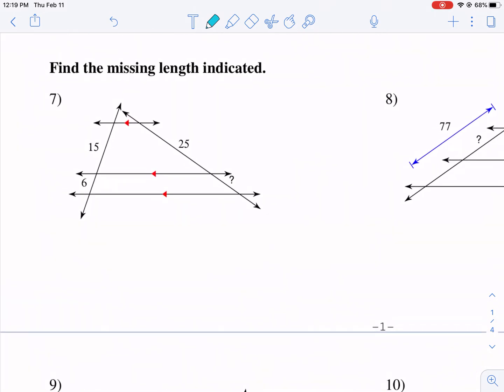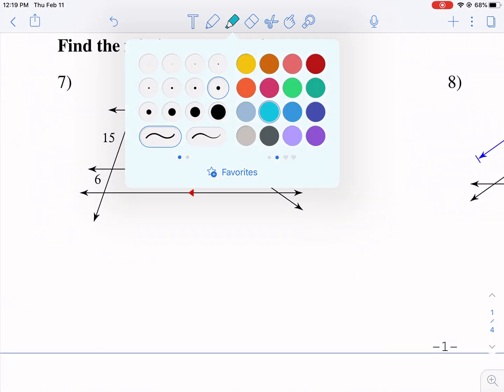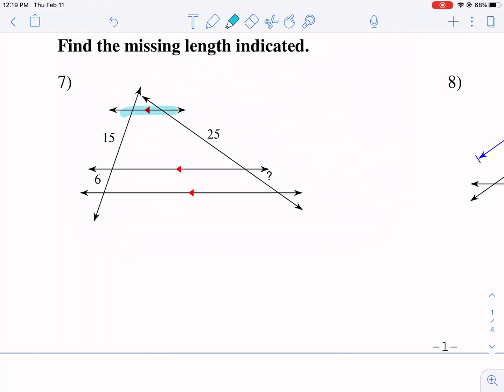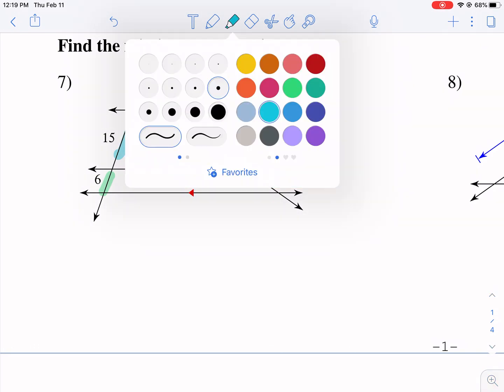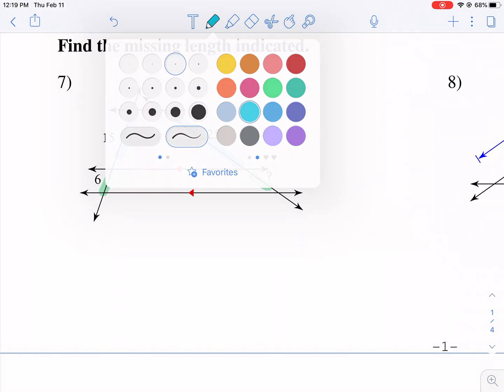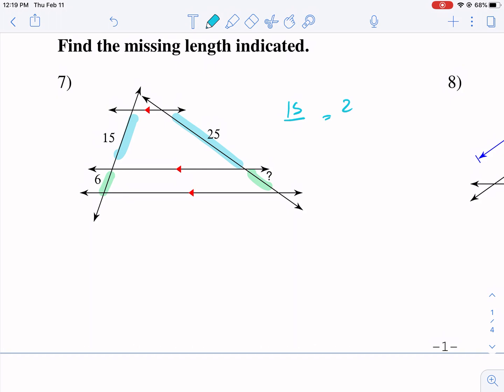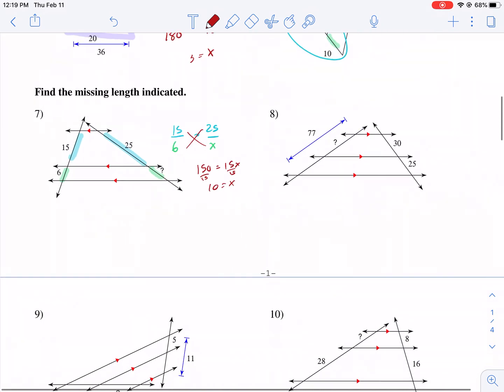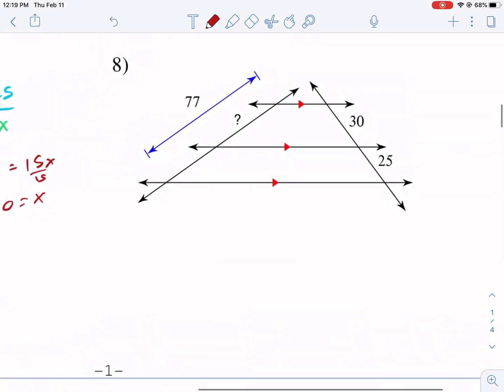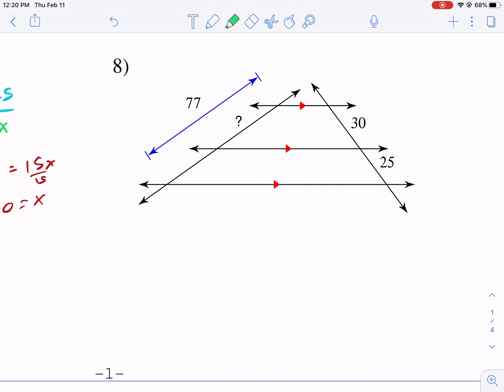Find the missing length indicated, we have more here. This is the corollary to the side splitter theorem. We can say that if these lines are parallel, which they are, 1, 2, 3 all parallel, we can say that 15 over 6 is proportionate to 25 over this question mark. So we're going to set that up. We're going to say 15 over 6 equals 25 over our x. Notice how I'm just omitting that so I can write it like that. Now I'm going to cross multiply, I get 25 times 6, I believe that's 150 equals 15x. So I get x equals 10 after I divide both sides by 15.